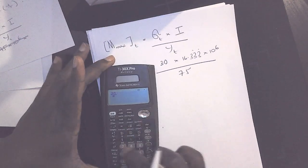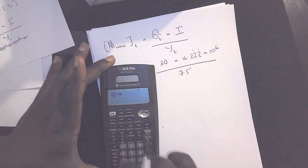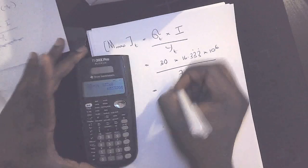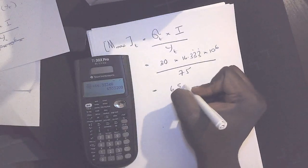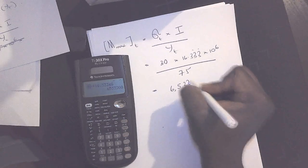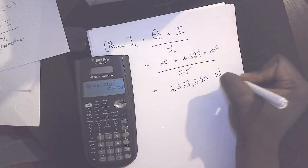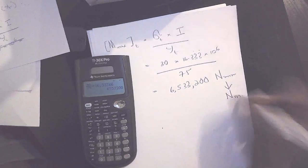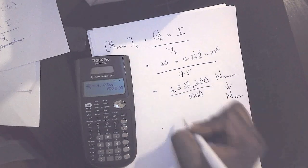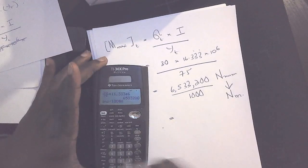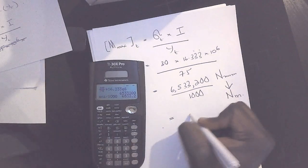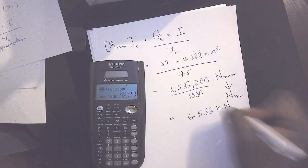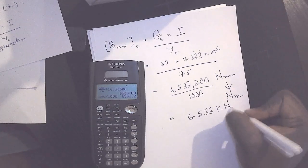So let's bring our handy calculator. This is 30 divided by 75 times 16.333 exponent 6. This gives us 6,533,200 newton millimeters. So again, we want our value to be newton meters, so we divide this by 1000. That'll give us 6.533 kilonewton meters.